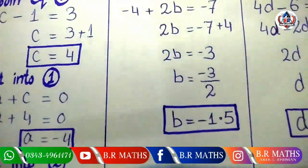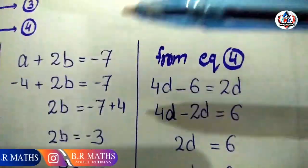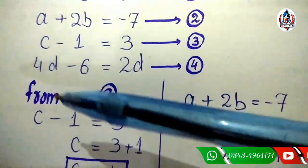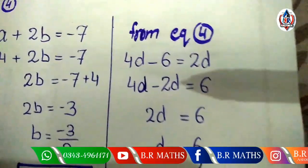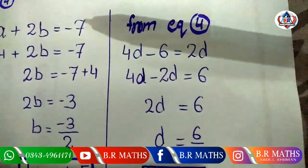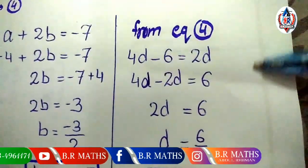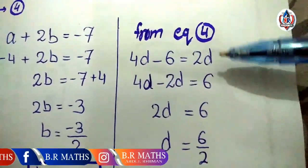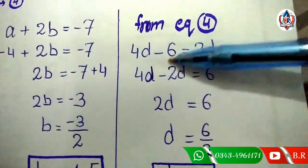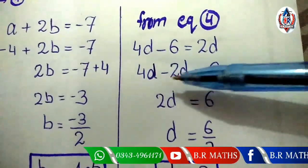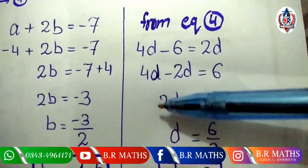These are 3 values a, b, c solved. Now the last value d is from equation number 4. 4d minus 6 equals 2d. Move minus 6 from left to right and 2d from right to left: it becomes minus 2d and minus 6 becomes plus 6. 4d minus 2d equals 6, which means 2d equals 6. 2 multiplied becomes divide: 6 divided by 2, and the result is 3.